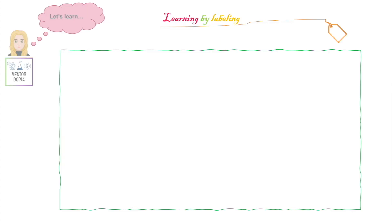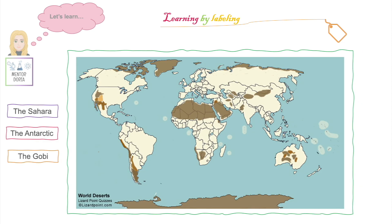Let's move on to our first activity, learning by labelling. Here we have three labels: the Sahara, the Antarctic and the Gobi. Each of these are three different deserts located in different parts of the world. What I would like you to do is give each of these stars the correct label. Which of the three labels do you think is the correct name for the first star?